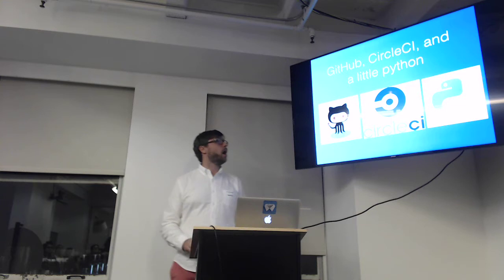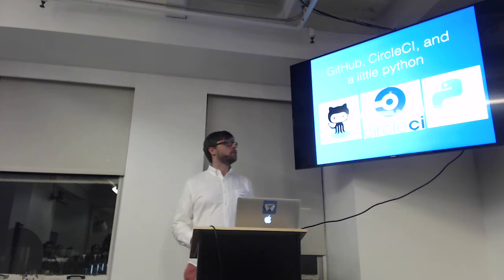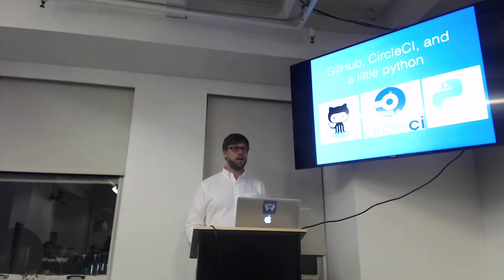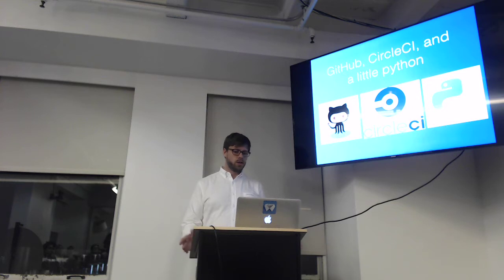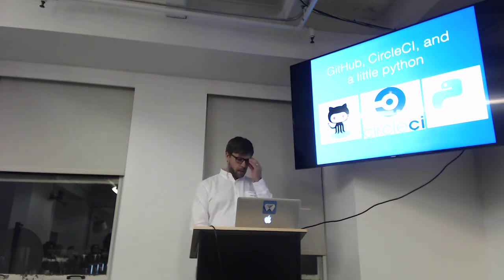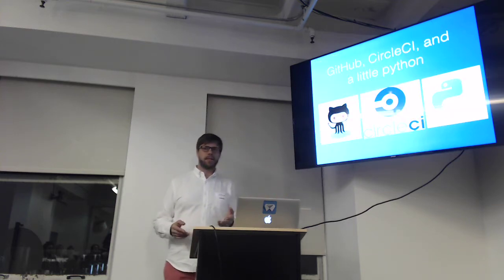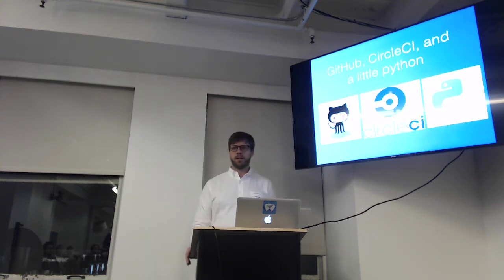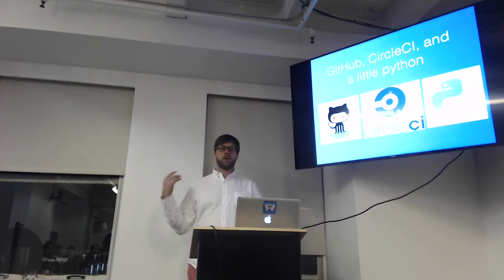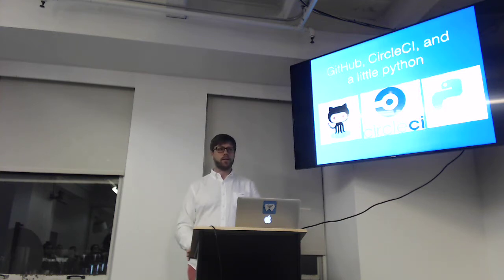How did we do it? It's using GitHub, CircleCI, and then just a little bit of Python to actually run it. CircleCI is a continuous integration tool — you could use the same thing with Jenkins. The beauty of it is that any time somebody pushes something to GitHub, so if you push to the development branch, the whole process runs, it creates the build and puts it out onto S3.